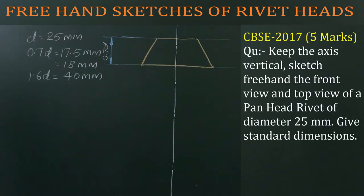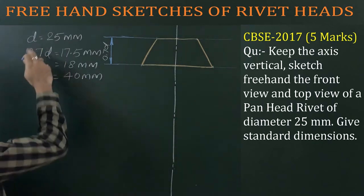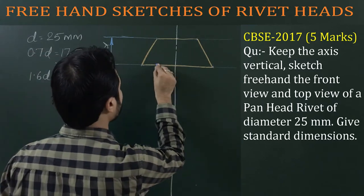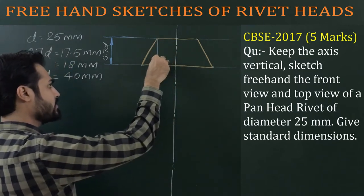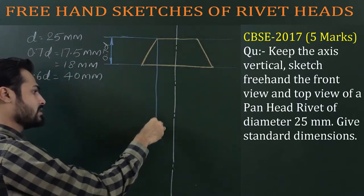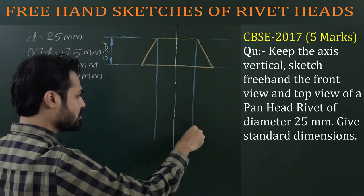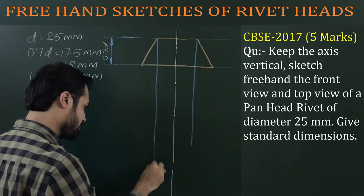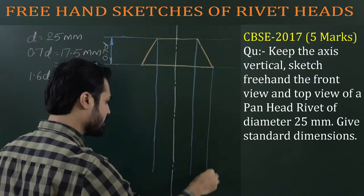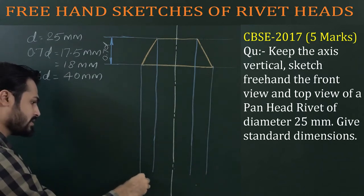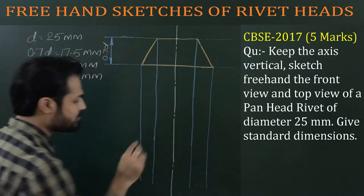Next, the diameter of the rivet body is also D, so mark limits of D — half of D on each side. Since this diameter is also D, it will coincide with the upper head diameter. Then draw projectors for the front view and the remaining part of the front view, and also for the top view.